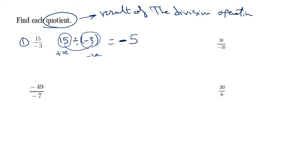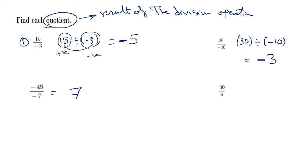Again, 30 divided by a negative number: positive divided by negative gives a negative answer, and 30 divided by 10 is negative 3. In the case of both numbers having the same sign, the answer is always positive. So negative 49 divided by negative 7 gives positive 7, and 30 divided by 6 — both positive — gives positive 5.